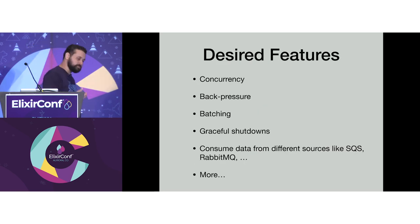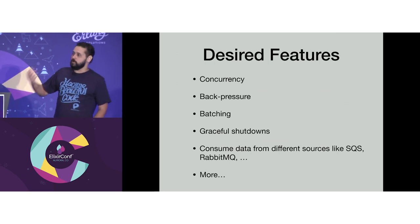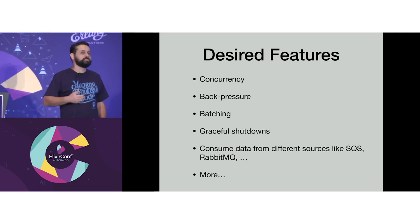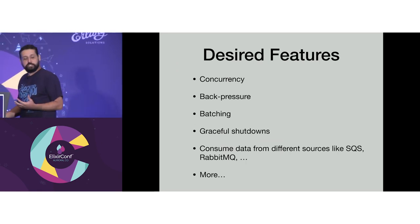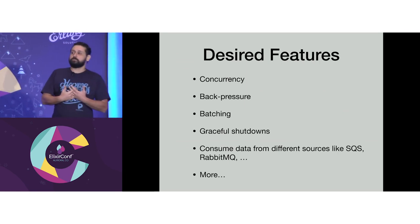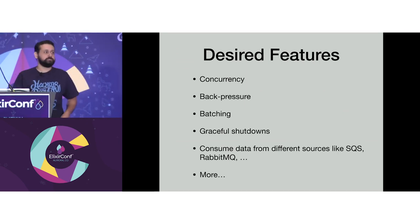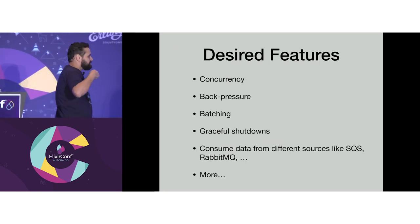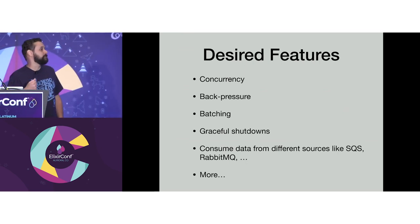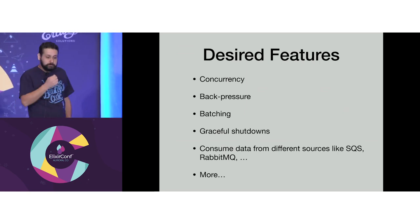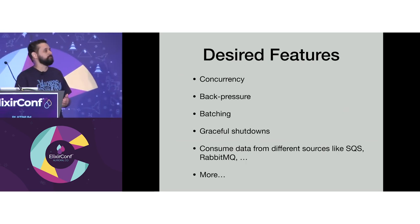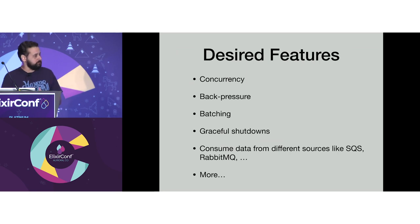Here are some examples of those features. If you want to process data efficiently, you need concurrency and back pressure so you don't drain all resources from your machine. You're probably going to need batching — especially if you work with S3, where you can improve throughput by an order of magnitude using batching instead of sending message by message. Graceful shutdown is something really important and kind of hard to implement. And you also want to consume from different sources: SQS, RabbitMQ, Kafka, and many others.